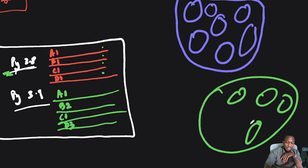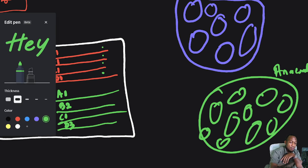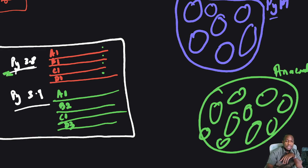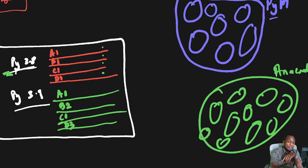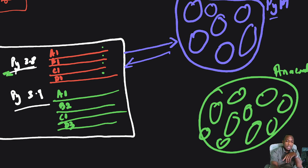We'll draw two package indexes: one is the Anaconda package index and the other is the PyPI package index. As I mentioned in previous videos, PyPI is a bigger package index than Anaconda. When you use pip, it goes out to the PyPI package index and grabs packages and installs them into your Python environment. So if you have Python 3.8, pip will come and install packages into that Python 3.8 — if you need A1, pip grabs A1 and installs it for you.